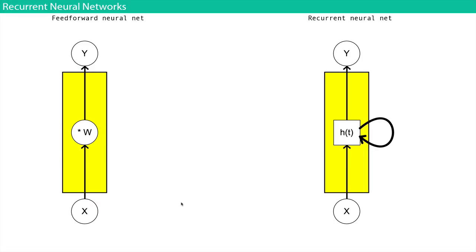The diagram shows the difference between a feed-forward neural network and a recurrent neural network. A feed-forward neural network includes all the kinds we've mainly discussed so far — ordinary fully connected ones and convolutional neural networks. You can take everything we've learned so far and encapsulate it into this diagram, because basically all neural networks we've looked at so far work something like this.